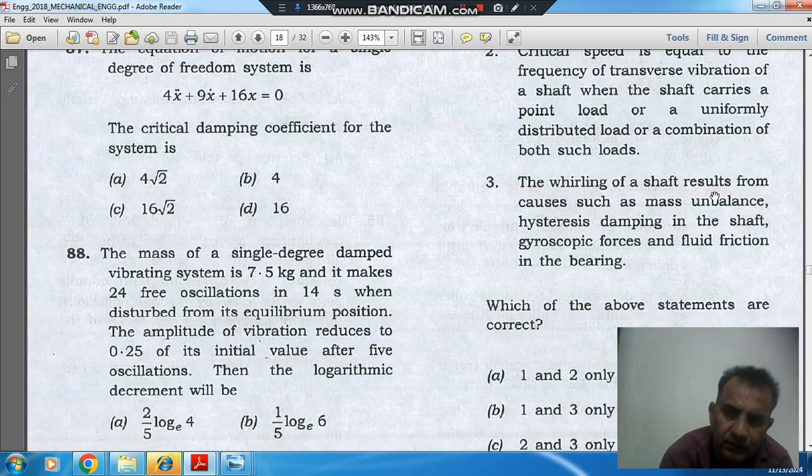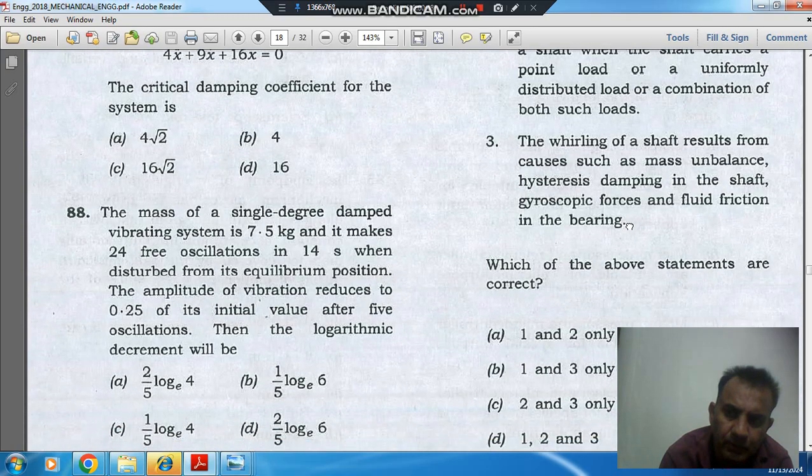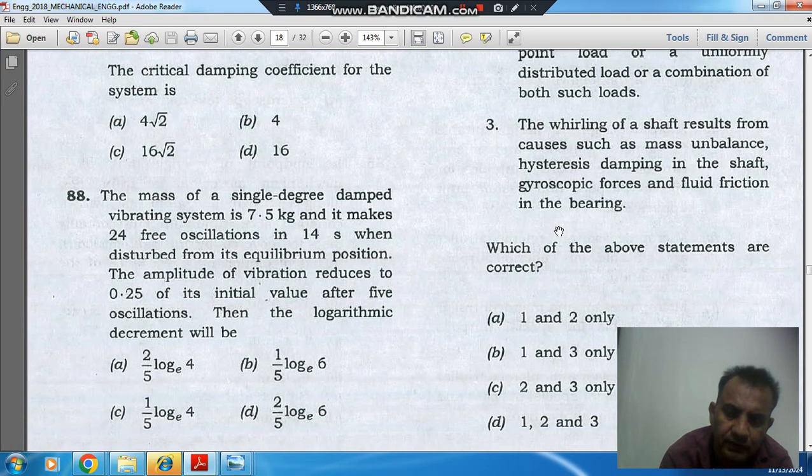3. The whirling of a shaft results from causes such as mass unbalance, hysteresis damping in the shaft, gyroscopic forces and fluid friction in the bearing.